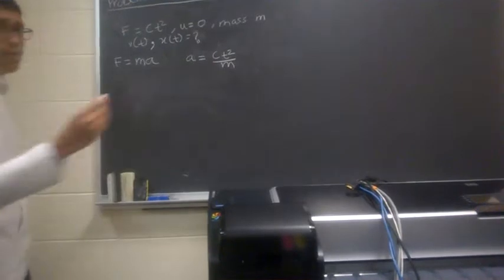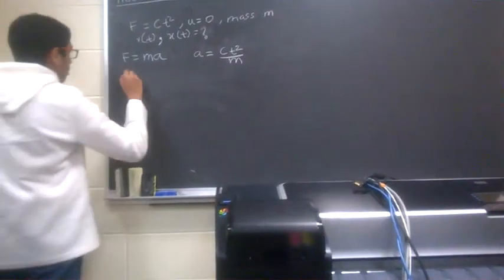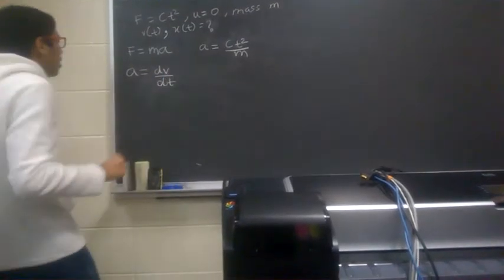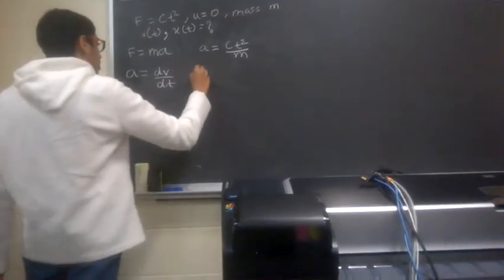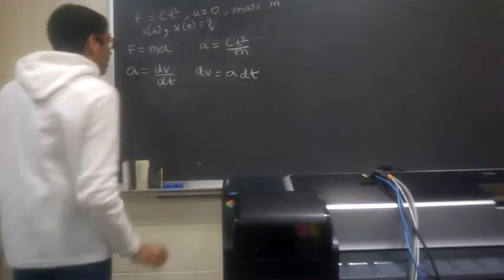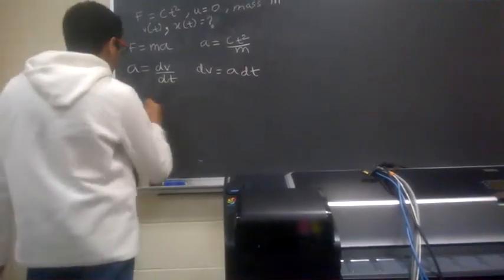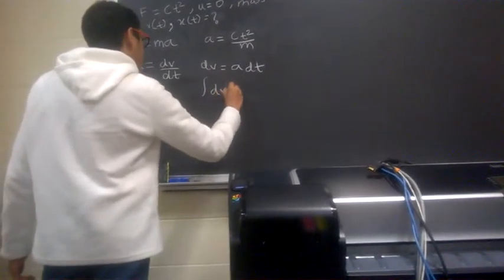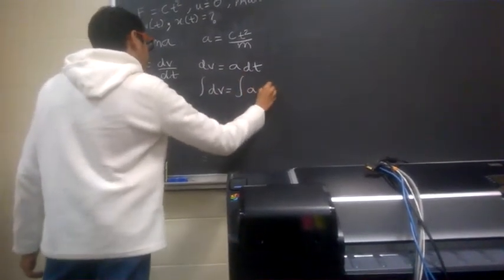And now, using the basic definition of acceleration, which we know is F is equal to dv dt, we can get dv is equal to a dt. And then after that, we integrate on both sides, which gives integral dv is equal to integral a dt.